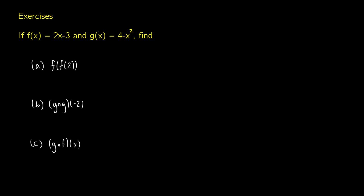Let's do an exercise. We're going to evaluate some functions where f of x equals 2x minus 3 and g of x equals 4 minus x squared. We're going to find f of f of 2, g of g of negative 2, and g of f of x.